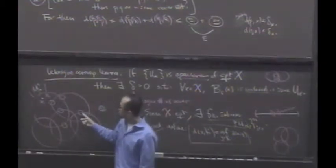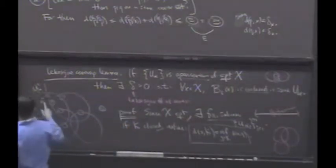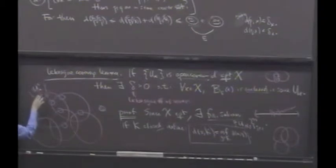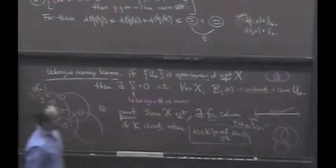Right? So, if I could show that for at least one of the sets, there's a minimum delta ball around a point x that separates that minimum distance delta to a complement, I'm in good shape, yes? So, here's the slick idea.